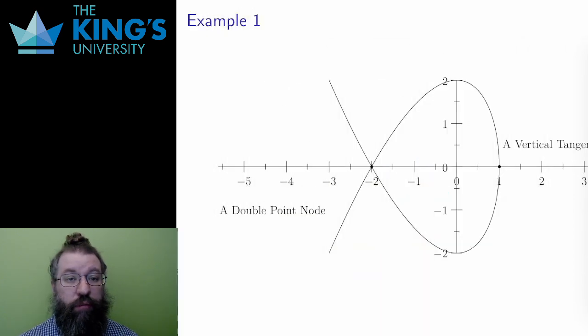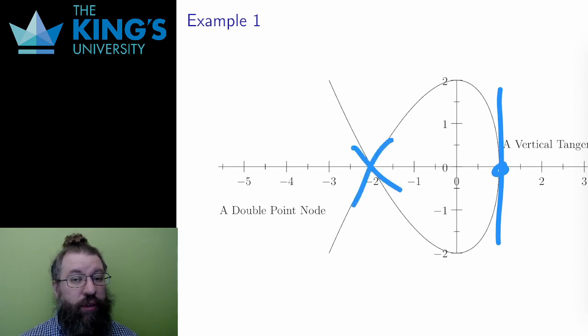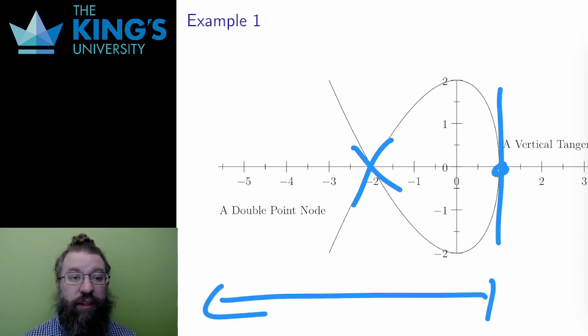Here is the graph of the curve. There is indeed a vertical tangent at x equals 1, and a double-point node due to self-intersection at x equals -2. The domain restriction is also visible here. The curve has no points for x values past 1.